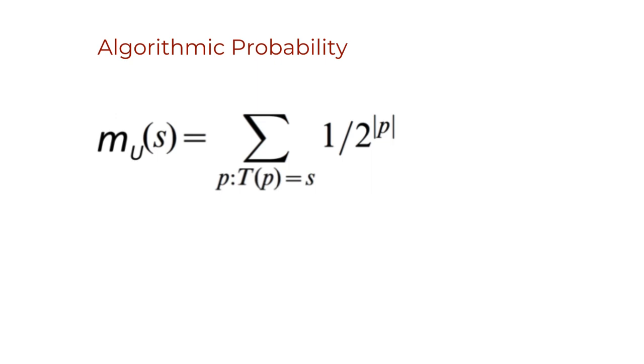Also just like Chaitin's omega, M of a string is lower semi-computable because one can numerically estimate values that are lower bounds of M.